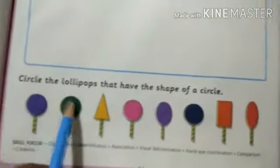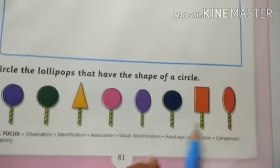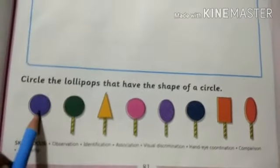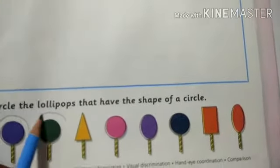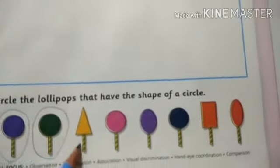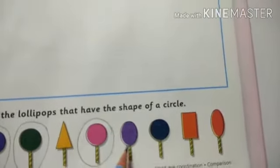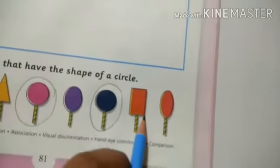Circle the lollipops that are the shape of a circle. Different shapes of lollipops are given. The ones that are circle shape, circle them. This lollipop is triangle — don't circle it. This lollipop is oval shape — don't circle it. This lollipop is circle shape — circle it. This is rectangle shape and this is oval shape; circle only the circle-shaped ones.